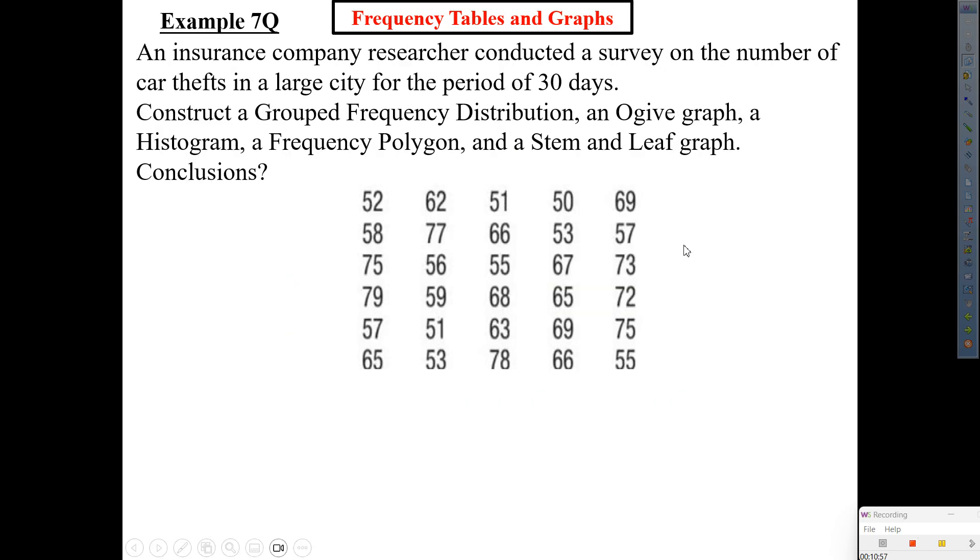Bam. Copy this one. Example 7Q. Copy all the instructions, including the problem. Don't copy the data. I'm going to send that to your screen. So here it goes. It reads, an insurance company researcher conducted a survey on the number of car thefts in a large city for the period of 30 days. Construct a grouped frequency distribution, an ogive, a histogram, a frequency polygon, and a stem and leaf.